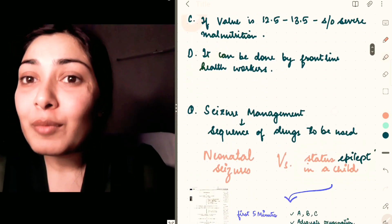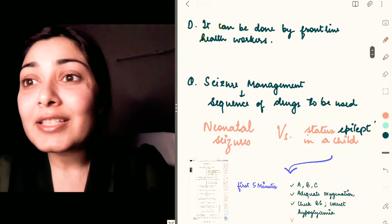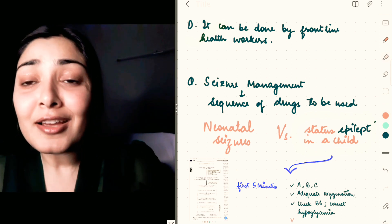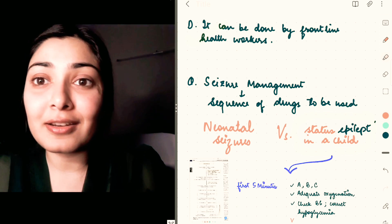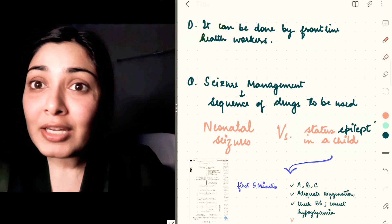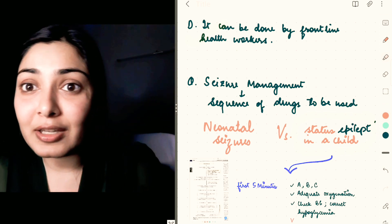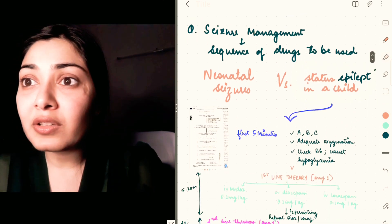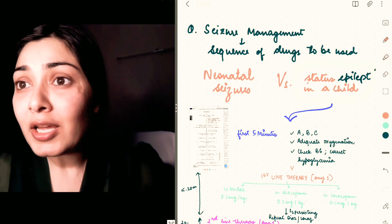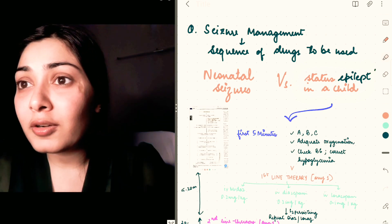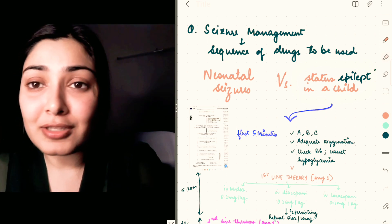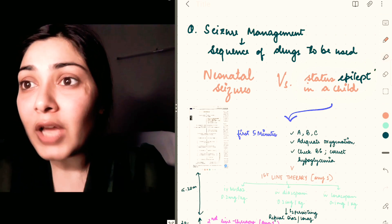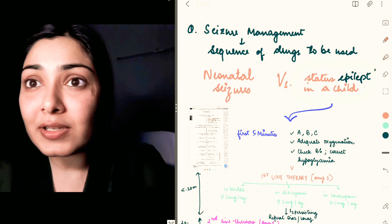Now coming to the third question, management was asked—the sequence of drugs used in status epilepticus. In the first session they asked status asthmaticus, and in the second session it was status epilepticus. Keep in mind that in NEET PG also they're going to ask either one of these emergencies and their management. Initially there was confusion whether they asked about neonatal seizures or status epilepticus in a child. I think the majority of you gave a review that it was status epilepticus and not neonatal seizures. Management of both seizures is different because hypocalcemia comes in the picture in neonatal seizures—we focus more on metabolic derangements.